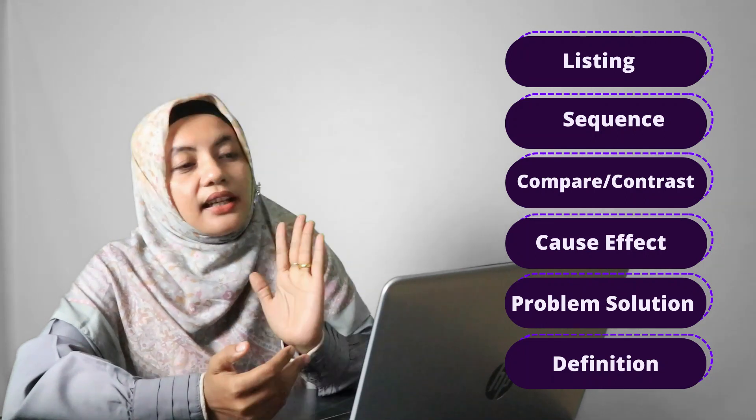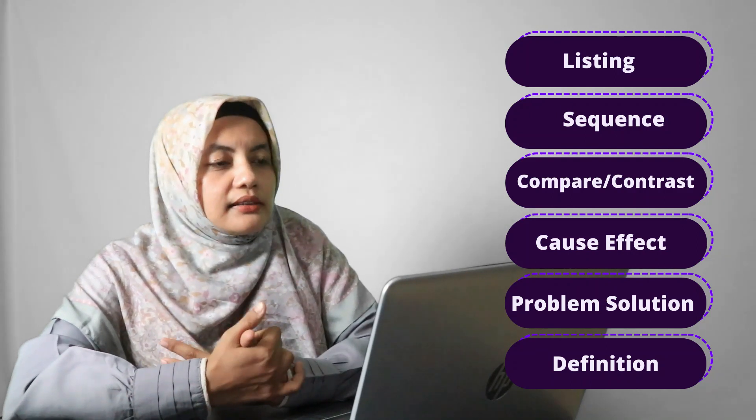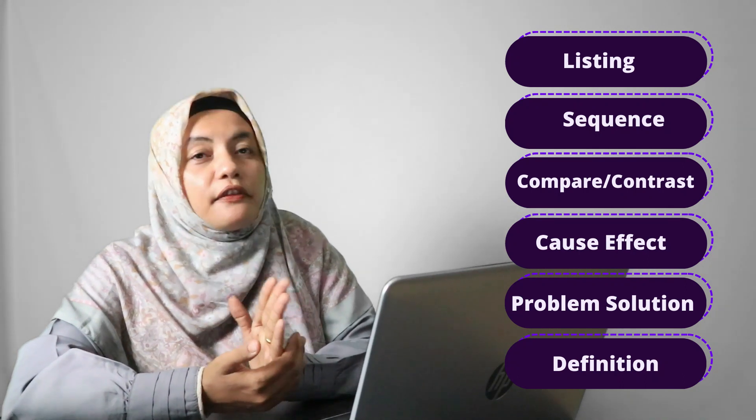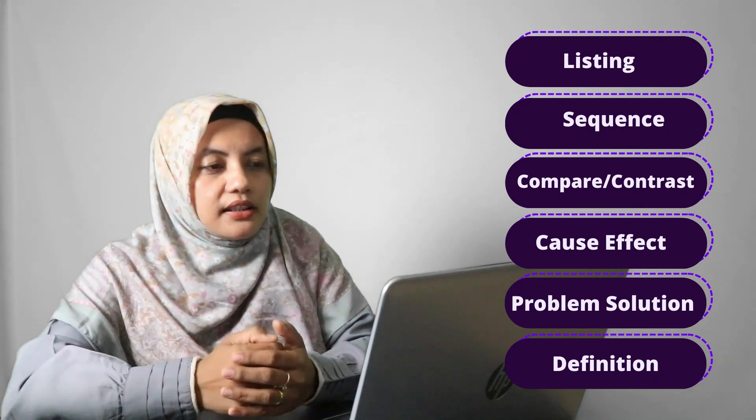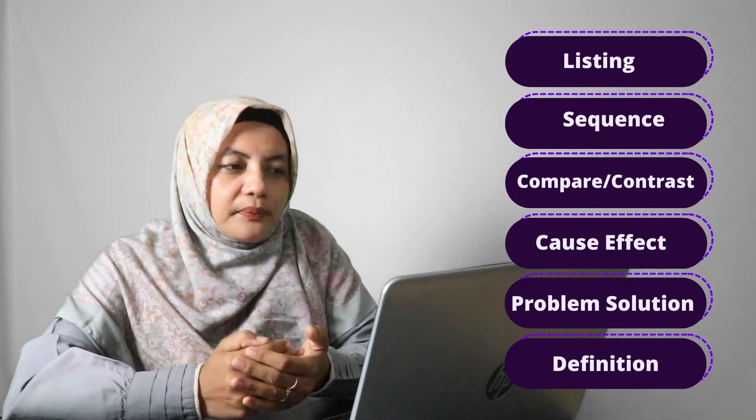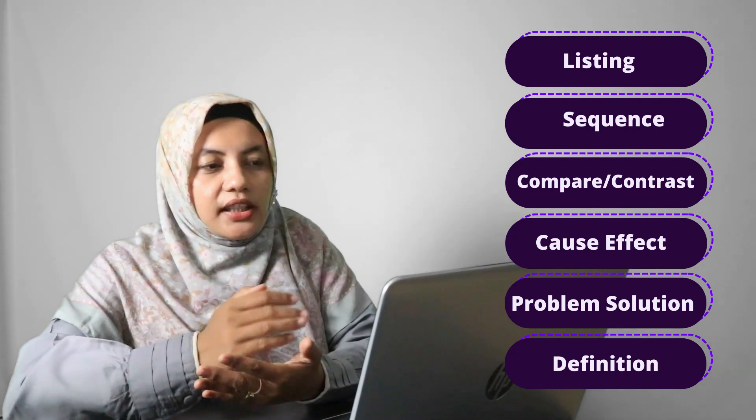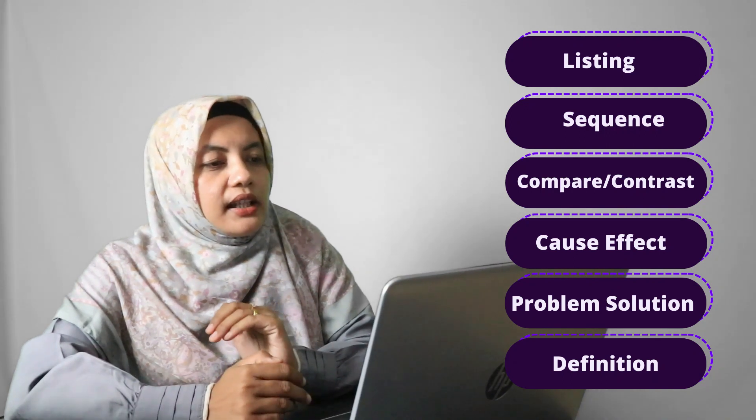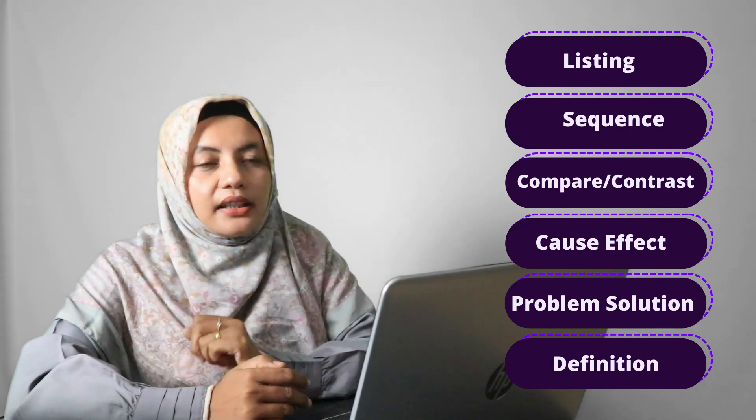The last type in text features is definition. Definition means the text provides a definition or explanation. It states that there are usually no signal words for the details. For the definition text, there are no signal words for details, only keywords or phrases in the main idea, such as: part, consist of, is, seems to be, defined.